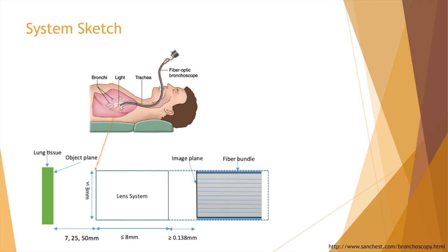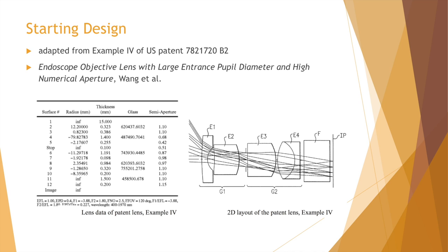At the conventional imaging plane, the fibers relay the image to the other end of the fiber and register the image onto an eyepiece or a digital screen. The objective design is performed with ray-tracing software Code5. We adopt one of the examples from a patent as our starting design. The objective lens has five elements in total: one positive group and one negative lens group. The aperture stop is placed in between these two groups.